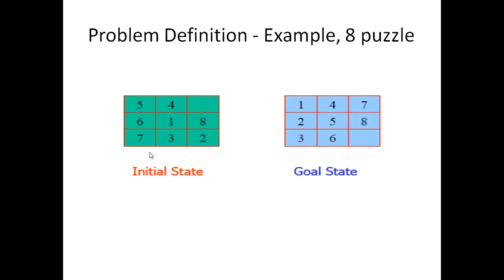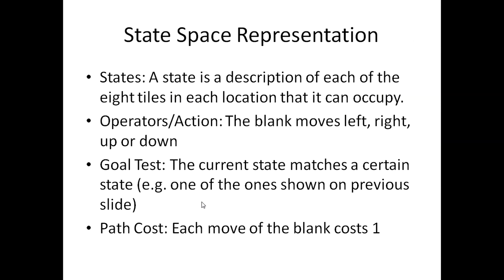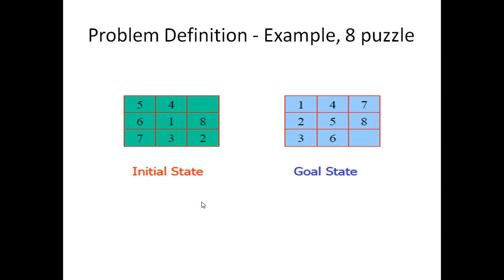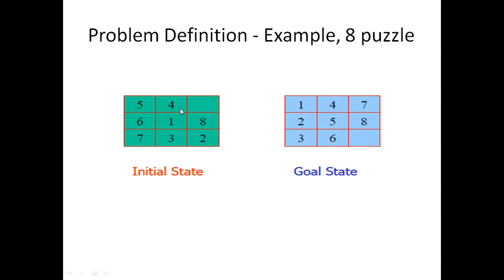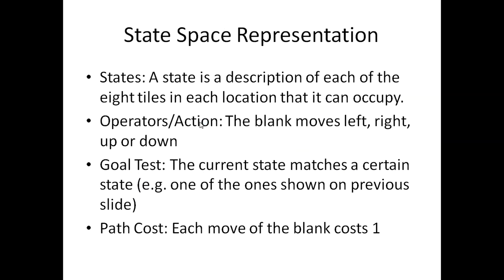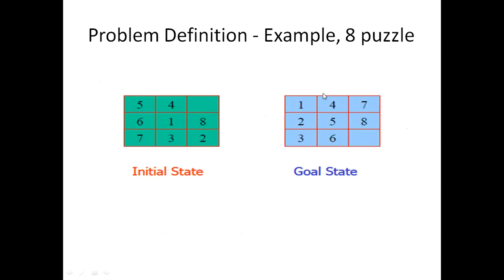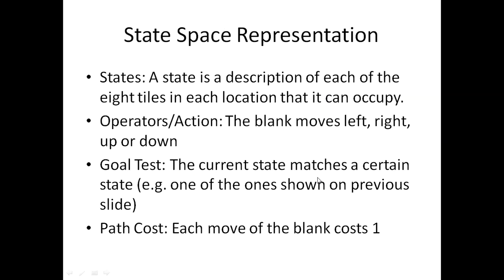Let's see a problem definition of the 8-puzzle. We have an initial state and a goal state, and we must convert the problem into a state space representation. States are the different configurations of the puzzle — the initial state is given, and the goal state is shown in sky blue. The operators or actions we can perform are: the blank moves either towards the left, right, up, or down. The goal test checks whether we have reached the desired goal state configuration. And the path cost is one for every move — every time we move the blank space in any direction, it costs one.